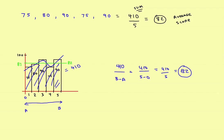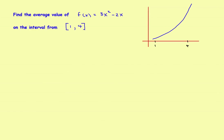Now let's take a look at our first calculus example. Find the average value of a function on a closed interval. In this case, f of x equals 3x squared minus 2x on the interval from one to four. The function is graphed, and a equals 1 and b equals 4.